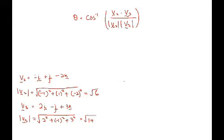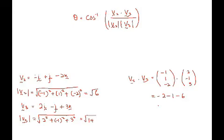And the dot product for V2 dot V3 is equal to negative 1, 1, negative 2 dot with 2, negative 1, 3. So we have negative 2 minus 1 minus 6, which is equal to negative 9.